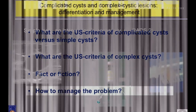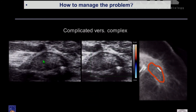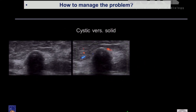How to manage the problem? A simple cyst usually needs no intervention — only if a cyst is painful or big, then you can go for evacuation by fine needle aspiration. This is a very simple procedure, quickly done if necessary. In the complicated versus complex situation, go for the mammogram — this is the right management. You realize this is a liponecrotic cyst, an oil cyst — a complicated cyst with no vessels inside. So this is without any problems.